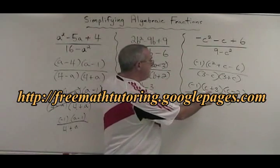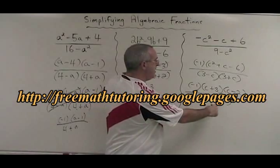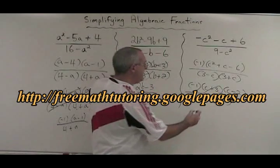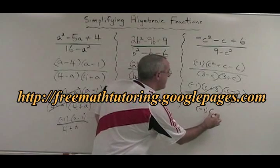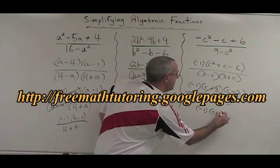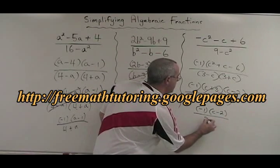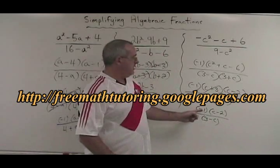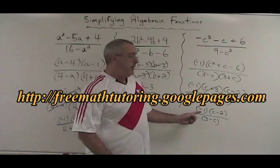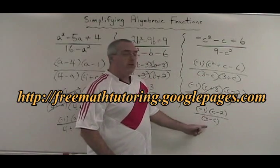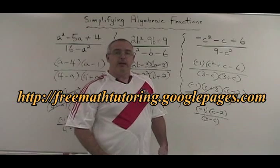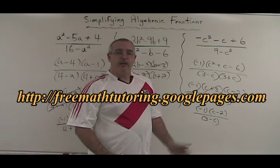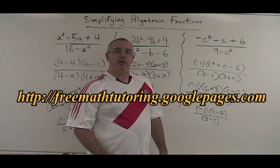I have a C plus 3 and a 3 plus C, which will cancel. My final answer will have the negative 1, C minus 2, and 3 minus C. Again, if you wish, you can multiply the negative 1 into either the numerator or the denominator to get another equivalent correct answer. This is simplifying algebraic fractions.